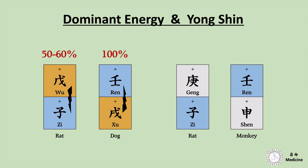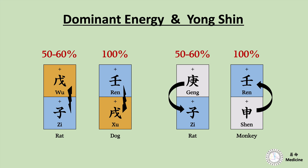Same for generating cycle. If we see these two, both have the structure of metal generates water. But this Shun metal can generate Ren water 100%, while this Gang metal can generate Zi water only 50 to 60%, approximately. There is always more influence if the controlling cycle or generating cycle starts from earthly branches.